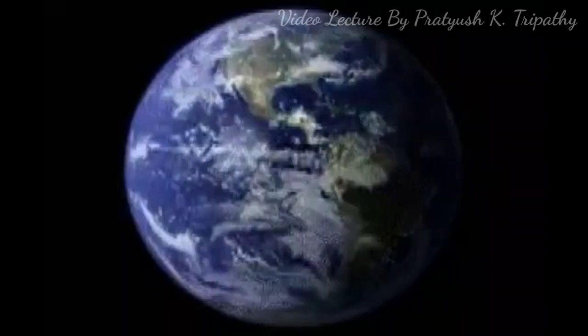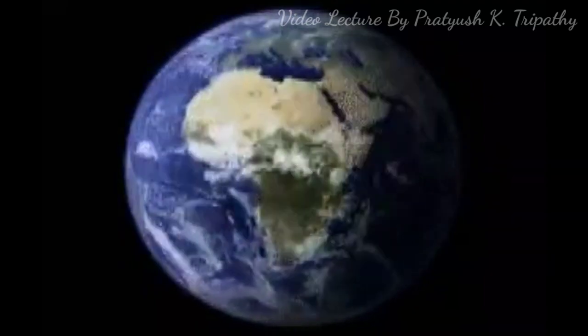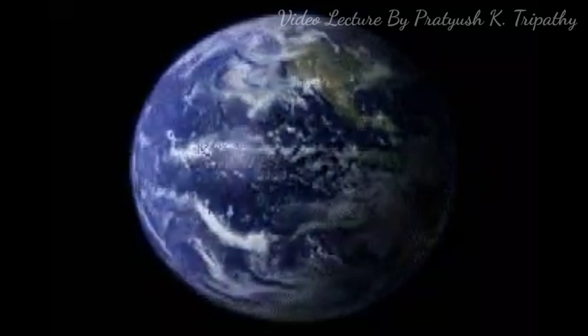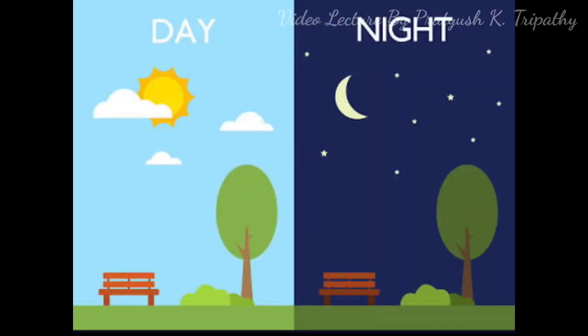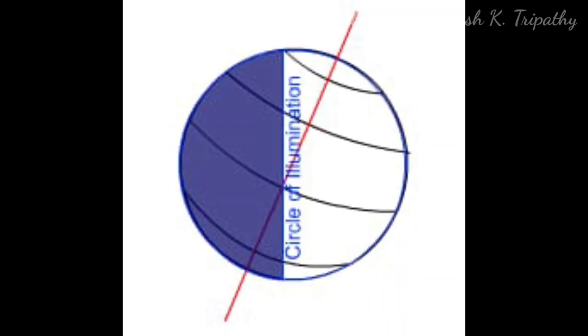Let's now come to the first part of this chapter that is rotation. The length of the day and night is directly related to the Earth's rotation. While rotating, a part of the Earth facing the sun has day and the other part has night. Circle of illumination is the imaginary line which shows clear demarcation between the phenomena of day and night on the Earth.